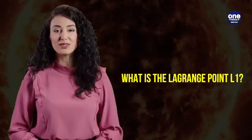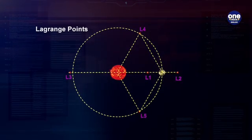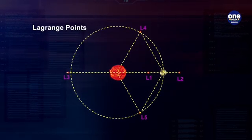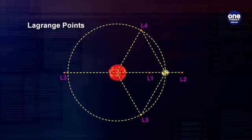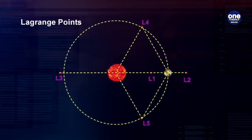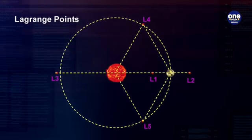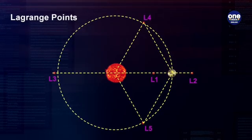So what is the Lagrange Point L1? Lagrange Point 1, often abbreviated as L1, is one of the five Lagrange points in the Earth-Sun system where the gravitational forces of the two bodies balance the centrifugal force felt by a smaller object, allowing that object to effectively hover in a stable position relative to the two larger bodies.